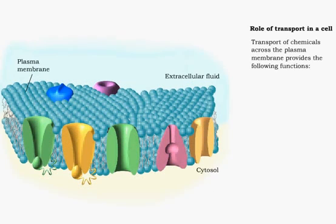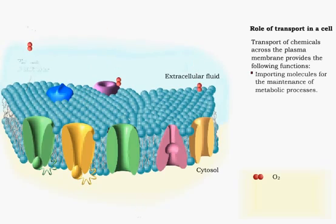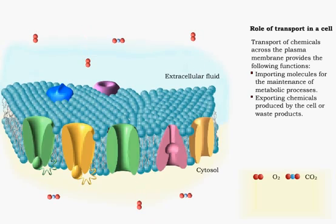Transport of chemicals across the plasma membrane is required for normal cell functions. Some chemicals, like oxygen, are imported to maintain metabolic processes in the cell. Others, like carbon dioxide, are exported as the cell produces them.